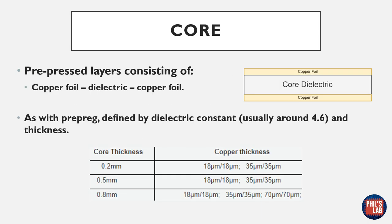In PCBs, you also have core materials, which are also dielectrics, but with copper foils sandwiched on either side. PCB manufacturers get pre-made cores where the copper foils have already been attached to the core dielectric material. Cores are defined by their dielectric constant, which is usually around 4.6 — but remember to check your manufacturer's specifications. Cores come in various standard sizes; for example, from one manufacturer they come in 0.2, 0.5, and 0.8 millimeters, with various copper thicknesses on either side.